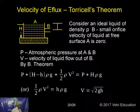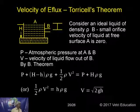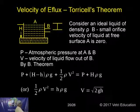Consider a liquid of density rho in a tube. B is a small orifice — a small opening through which water flows out. Velocity of liquid at the free surface A is zero, because the molecules at the free surface are always stationary. A equals zero. Atmospheric pressure acts at both A and B. V is the velocity of the liquid flowing out of B. By Bernoulli's theorem: P plus H rho G plus half rho V squared equals constant.